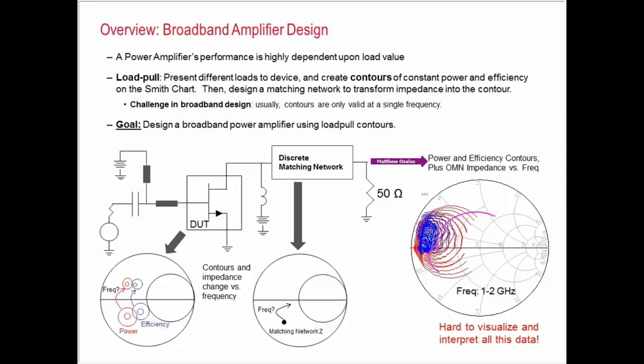Let's say for this particular device, I took a device and I generated some power contours, those are red, and some efficiency contours, those are blue, and then I also plotted an output matching network, which is pink, and I swept the frequency from one to two gigahertz. When I put all this data on the Smith chart, it's just very hard to visualize. It's just kind of a mess.